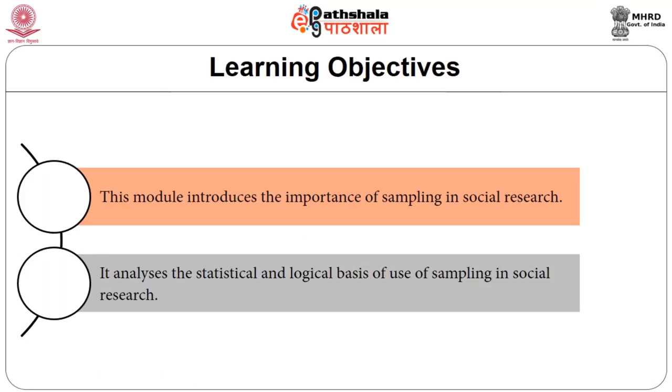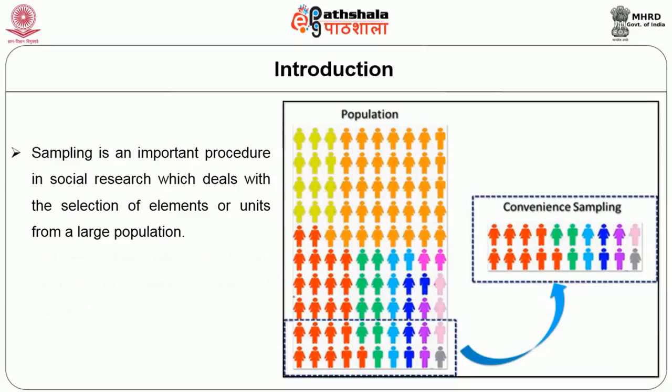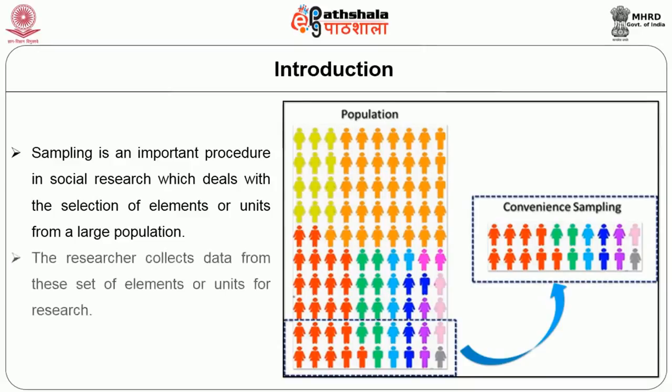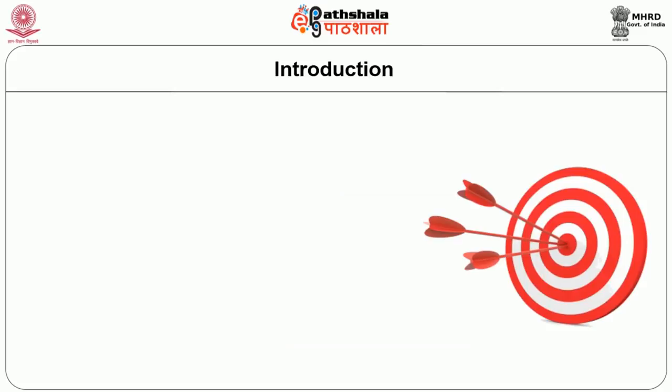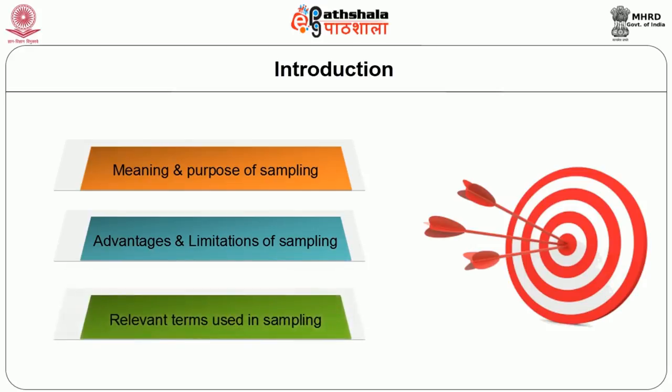In this module, we are going to discuss the issues associated with sampling. It focuses basically on the logical basis of sampling. It gives the meaning of sampling and also discusses the terms associated with sampling. Sampling is an important procedure in social research which deals with the selection of elements or units from a large population. The aim of this module is to familiarize you with the meaning and purpose of sampling, its advantages and limitations, and relevant terms used in sampling.